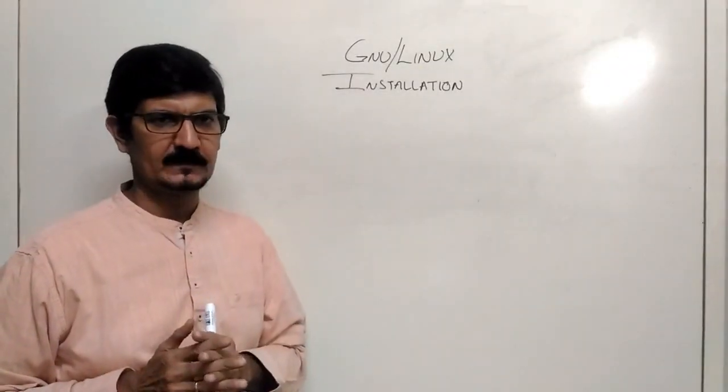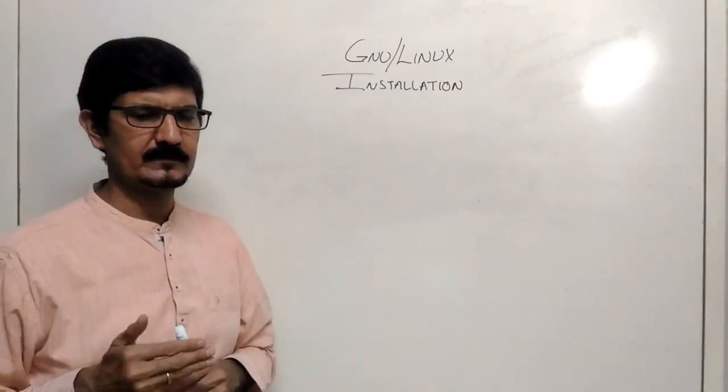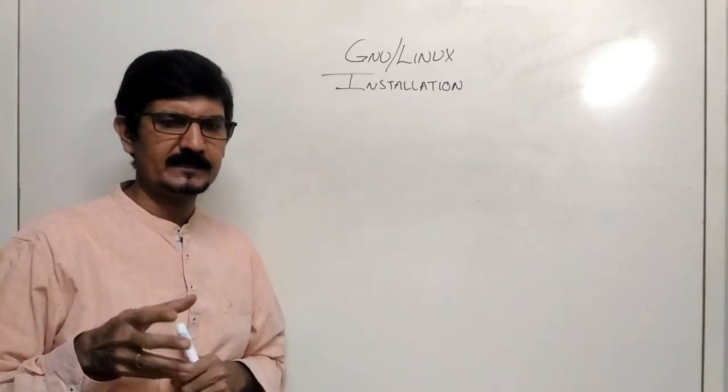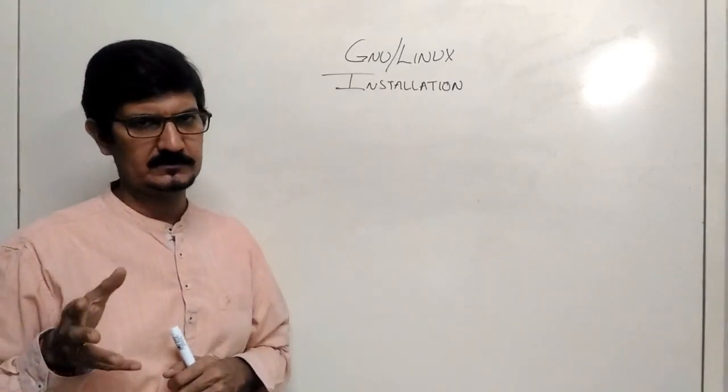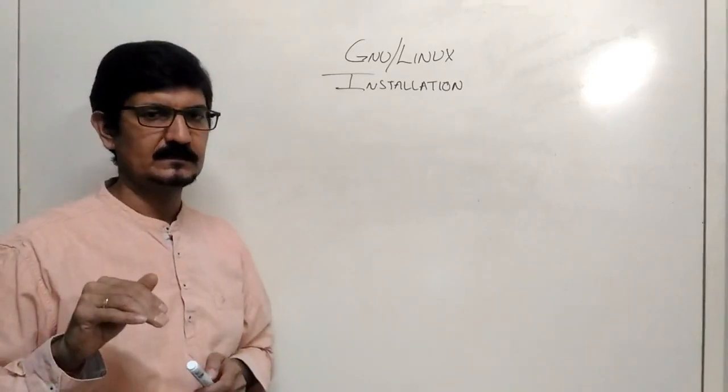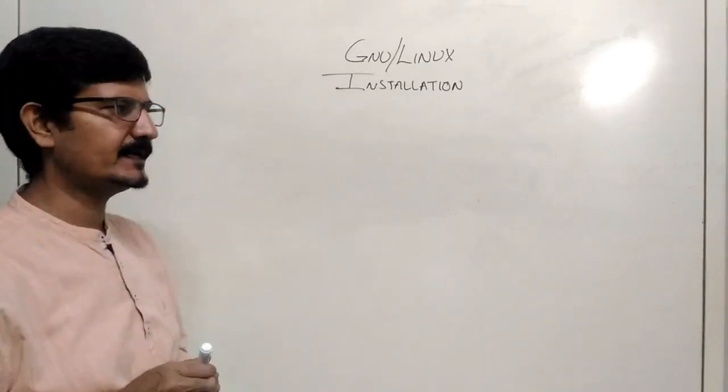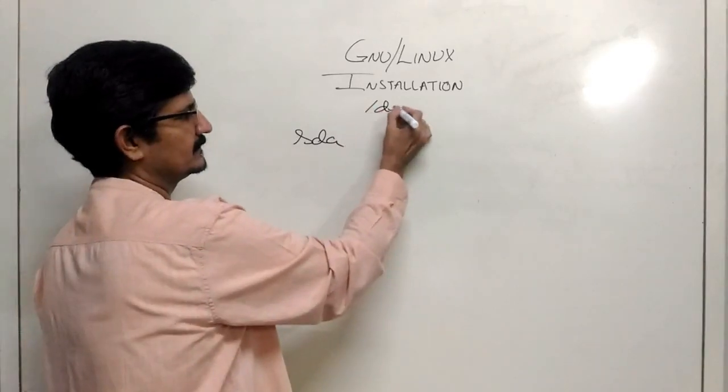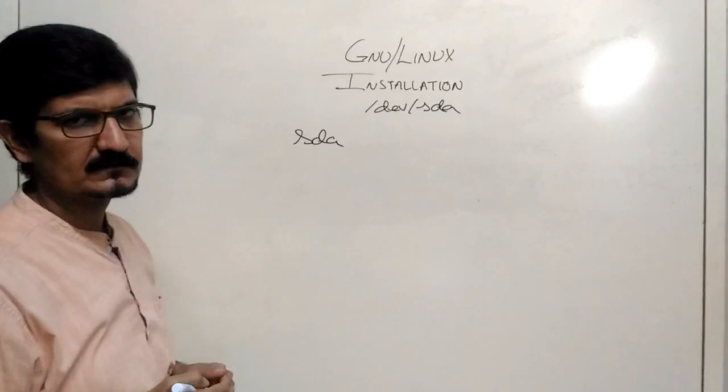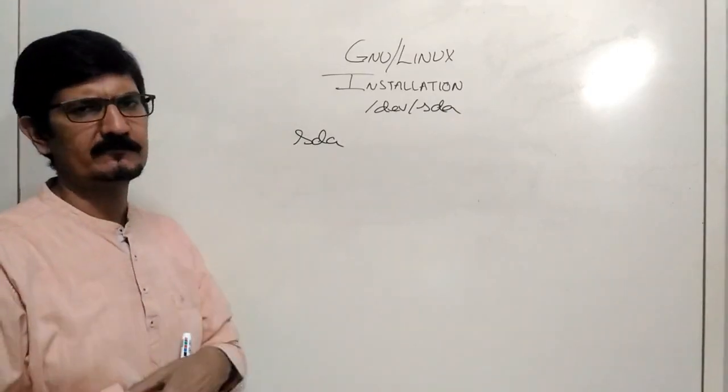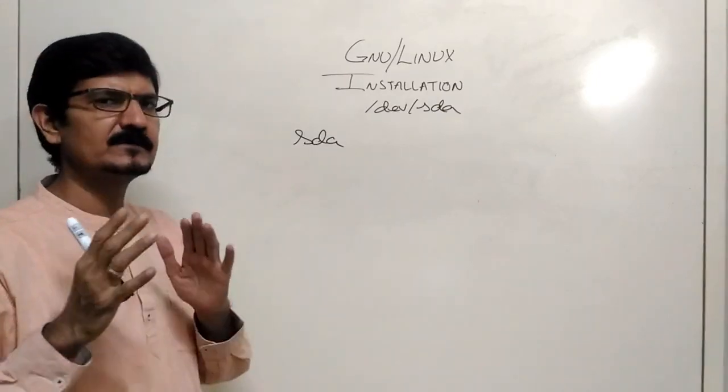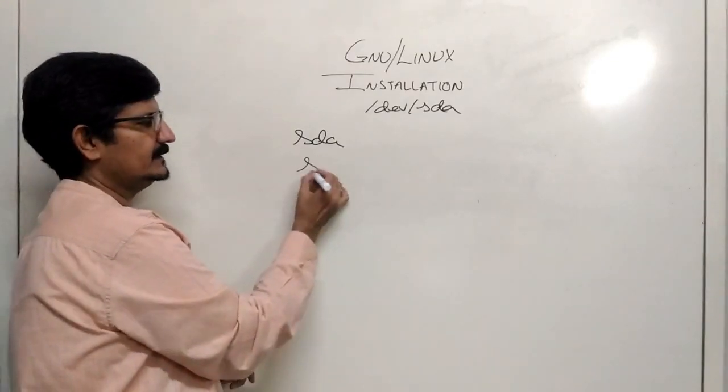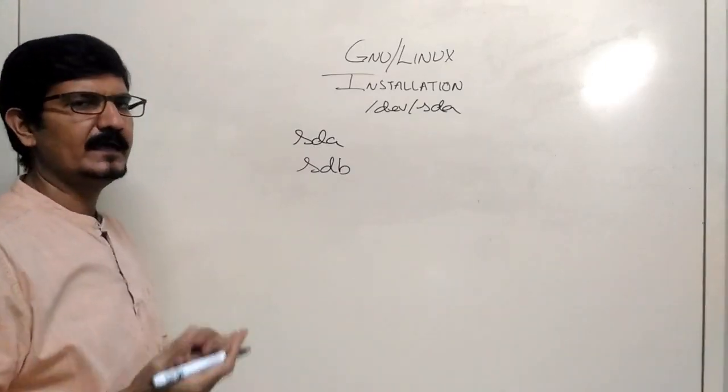When you have a computer, a Linux system is going to look at your hard drives as a different device. You will not see it like how you see it on Windows. Usually nowadays in the newer systems, your hard drive, the first hard drive attached will be referred as SDA. This is the location of the hard drive when you have installed your system. If you have a second device, then it will be SDB, SDC, SDD and so on.